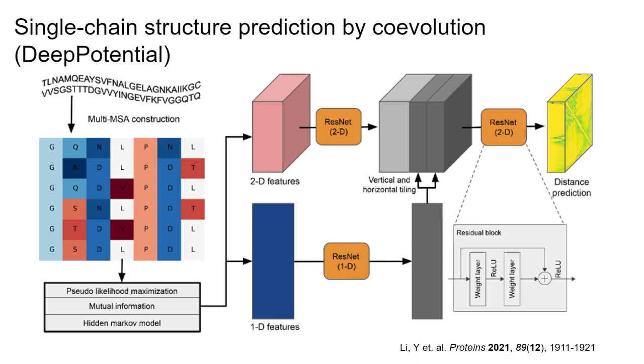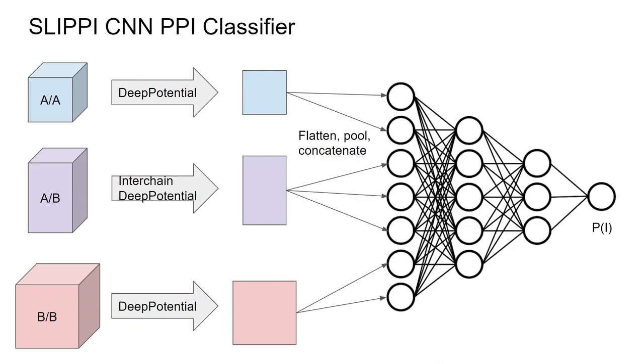Once we have a paired multiple sequence alignment, how do we extract co-evolutionary information? In the monomeric case, this is done with programs like DeepPotential for structure prediction. You construct a multiple sequence alignment, then it uses deep residual convolutional neural networks to predict spatial restraints. We plan to use this tool to extract co-evolutionary information from our alignments. With paired alignments, we'll retrain the pipeline to better predict the interchain region of spatial restraints.